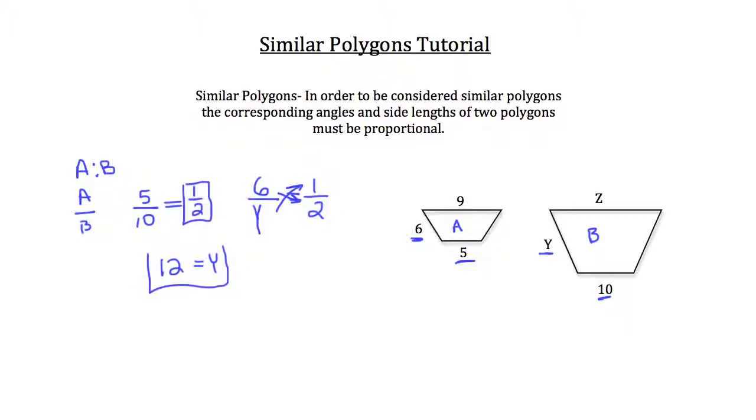So, Y must have a value of 12 if these two trapezoids are proportional. Let's do the same with the larger base of both trapezoids, 9 and Z here.